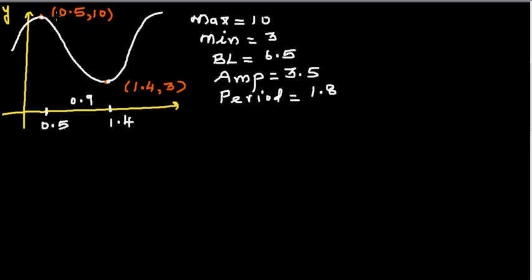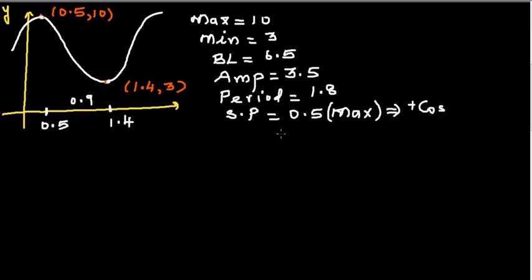The final thing to decide is where you want to start. If the starting point is at x = 0.5, which is the maximum, it's a positive cosine graph. If the starting point is at x = 1.4, which is the minimum, it's a negative cosine graph — minus cosine. We'll write both equations.